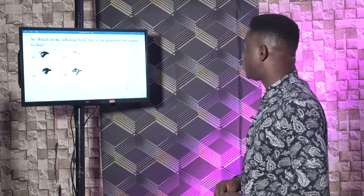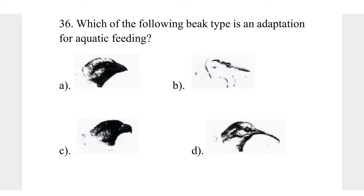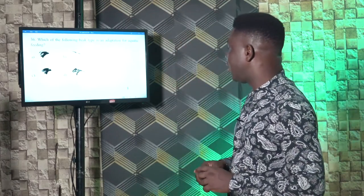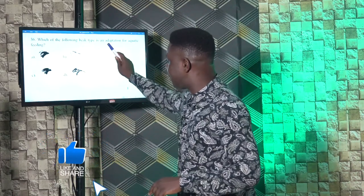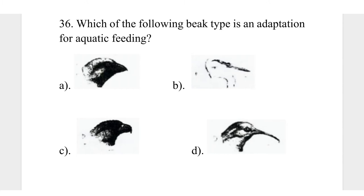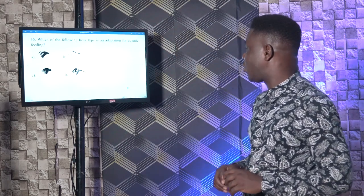Question 36. Which of the following beak types is an adaptation for aquatic feeding? For an aquatic feeder — for example, ducks — they will usually have serrated beaks. Serrated edges on their beaks are adapted for aquatic feeding. If you look at the images on the screen, the one that best describes that will be B. Answer D is most adapted for a hummingbird that requires a long beak to pick through holes. So the beak adapted for aquatic feeding is B.